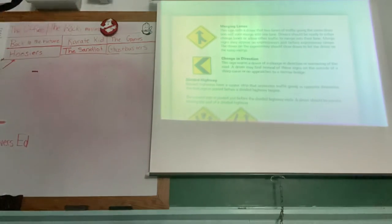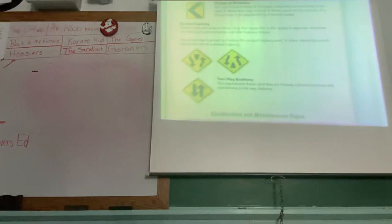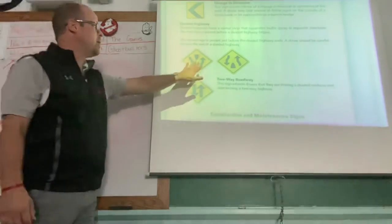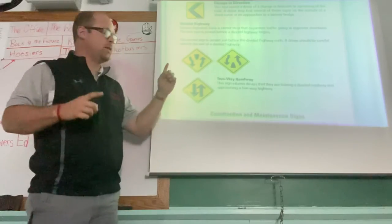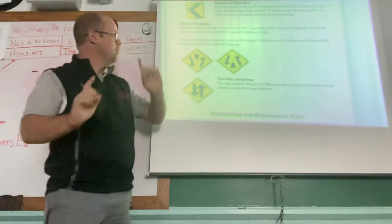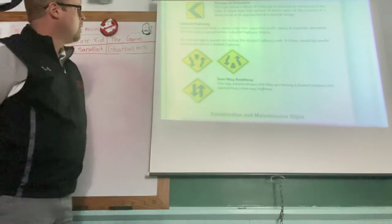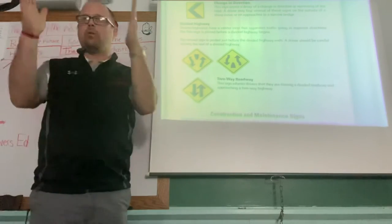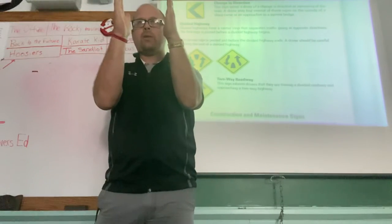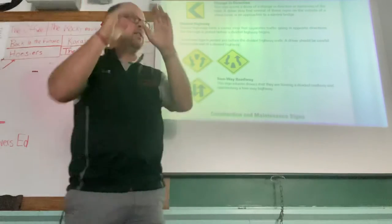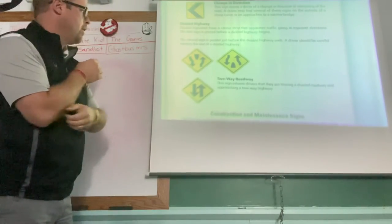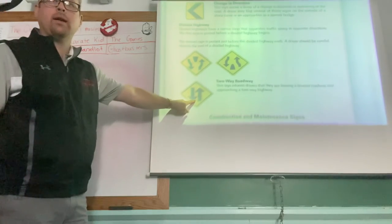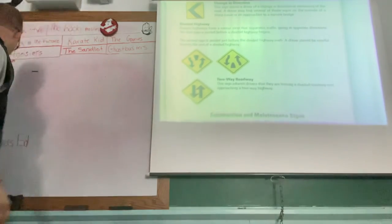Here's the other sign for divided highway. Remember there are two for some reason in Illinois. There's the white one with the arrows pointing this way, and then this one's got them going all curvy. That is if the road goes from two lanes right next to each other and then there's something in the middle of it, like a median, a boulevard, whatever. There's the two-way roadway sign.